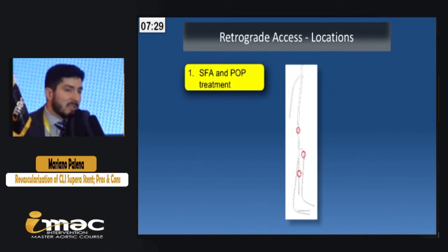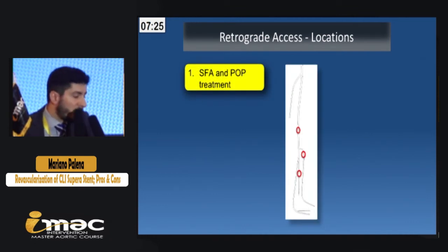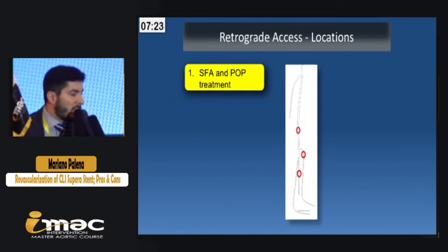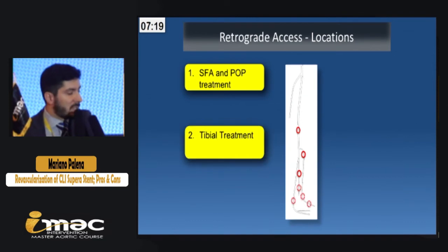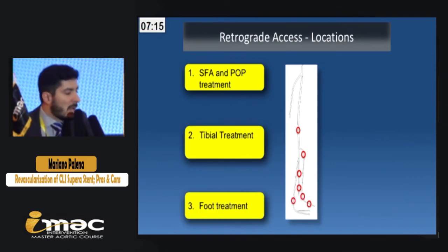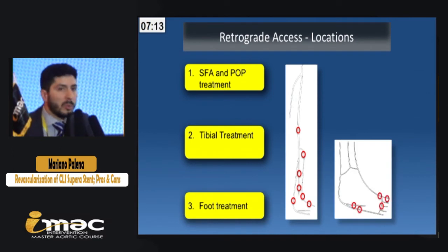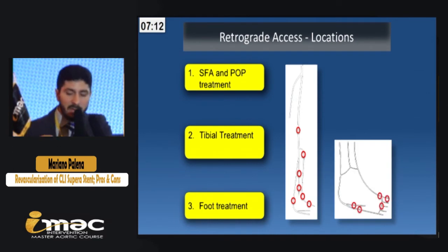The retrograde access is another option. I like to divide the retrograde access by the segment we need to treat. For the SFA and popliteal, I prefer the higher retrograde access. For the tibial arteries, we usually use foot artery access. And for the foot arteries, we use very distal and extreme access.